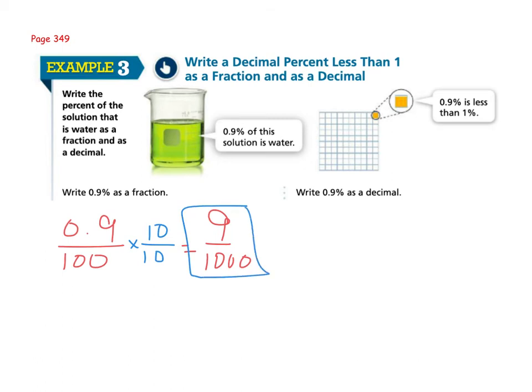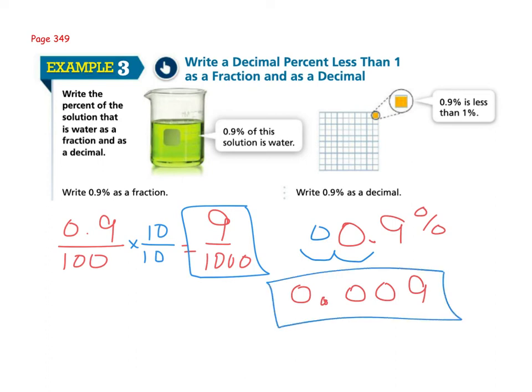Now to write our percent as a decimal, we start with the percent form, 0.9 percent. And remember, because we're going from percent to decimal, we're going to have to take that decimal point and go two spaces left. One, two. And if necessary, you would fill in an extra zero. So we're going to end up with the number 0.009. Always put an extra zero in front of decimal points so that we can actually see it. And that would be turning my percent into a decimal.